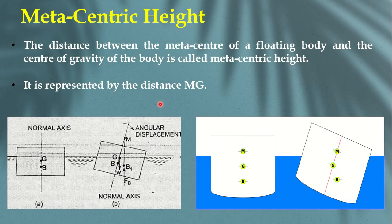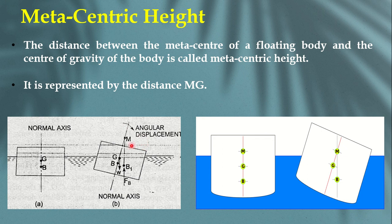Meta centric height is the distance between the meta center (M) of the body and the center of gravity (G) — the distance MG. This meta centric height plays a major role in the stability of floating bodies. Based on the position of M, you can decide whether a floating body is stable or not — that will be covered in the next video.